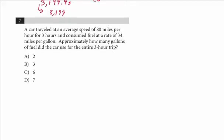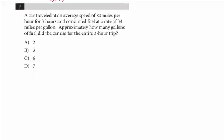Let's look at one more question, question number seven. A car traveled at an average speed of 80 miles per hour for 3 hours and consumed fuel at a rate of 34 miles per gallon. Approximately how many gallons of fuel did the car use for the entire 3-hour trip?